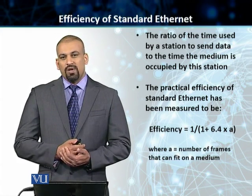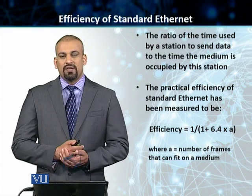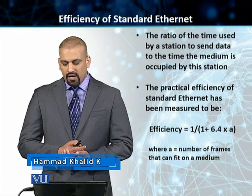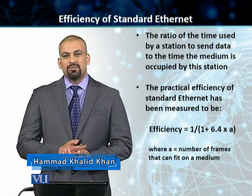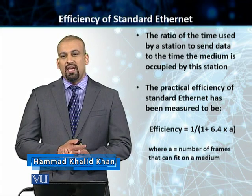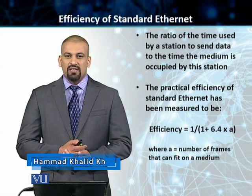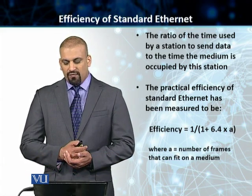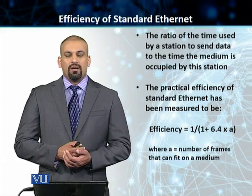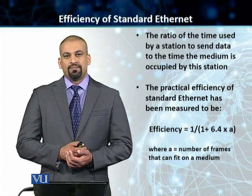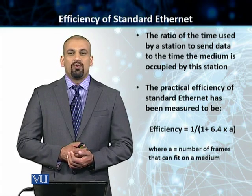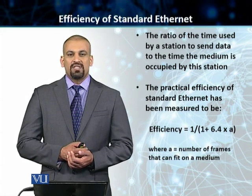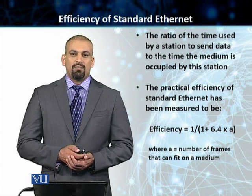The formula to calculate efficiency on a standard Ethernet is given as 1 divided by (1 plus 6.4 multiplied by a). This variable 'a' is equal to the number of frames that can fit on the medium. We'll try to understand this concept by using an example.